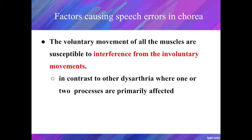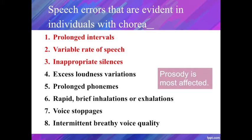Chorea can affect many different muscle groups. The voluntary movements of all the muscles are susceptible to interference from the involuntary movements, so all of the processes of speech are affected — in contrast to other dysarthrias where one or two processes are primarily affected. Chorea affects prosody more than any other component of speech production. The two prosodic errors most evident are prolonged intervals and variable rate of speech, caused by the unpredictable timing of the choreic movements. An individual may wait for the completion of an interfering choreic motion, causing prolonged intervals, or hurry through an utterance before the next choreic movement, causing a variable rate of speech.